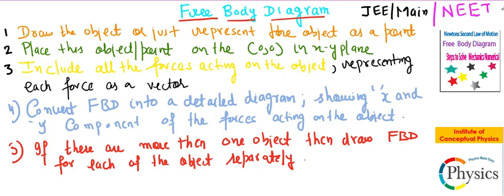And the last step is to ensure that if you have more than one object in the numerical or the problem, you have free body diagram for each one of the objects. So these are the five steps you must ensure to solve the questions pertaining to mechanics, especially the ones that have Newton's second law in consideration. Thank you.